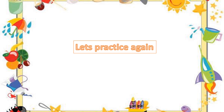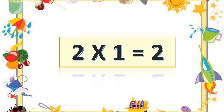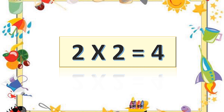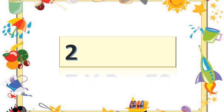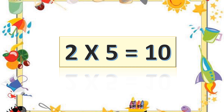Let's practice again. Two ones are two. Two ones are two. Two twos are four. Two twos are four. Two threes are six. Two threes are six. Two fours are eight. Two fours are eight. Two fives are ten. Two fives are ten.